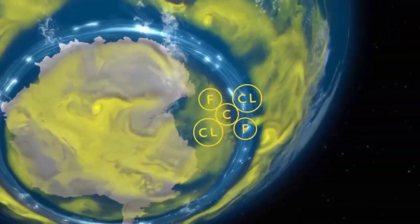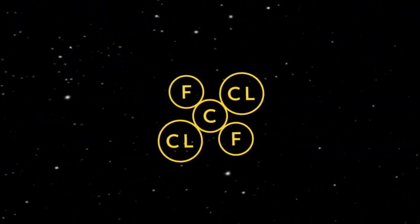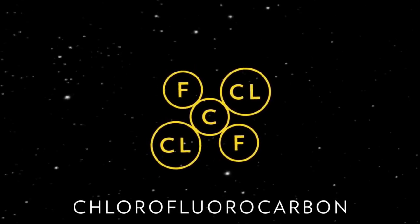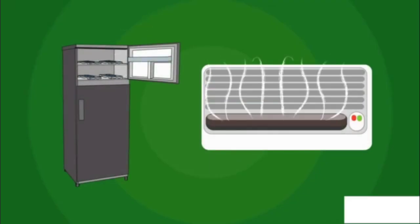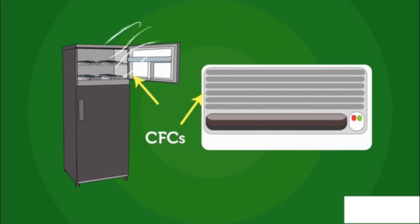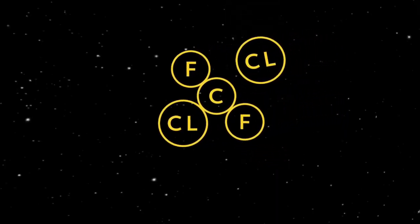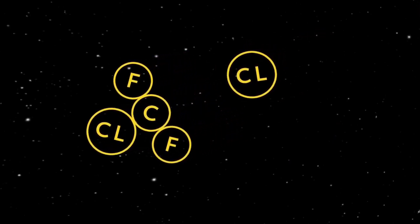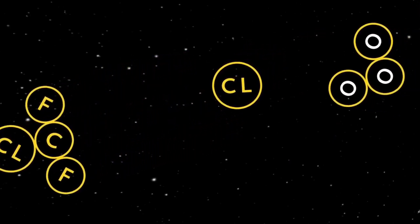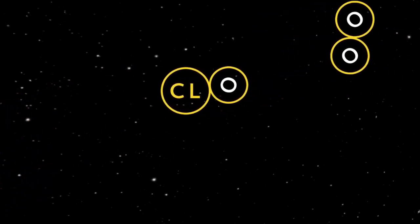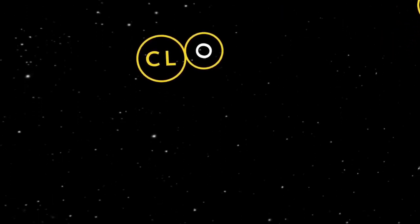Chemicals like chlorofluorocarbons, or CFCs, are the primary culprit in ozone layer breakdown. They are mostly generated from refrigerants, aerosols, and plastic products. When they are exposed to UV rays in the atmosphere, they break down into substances that include chlorine. Chlorine then reacts with oxygen atoms in O3 and breaks apart the ozone molecule.